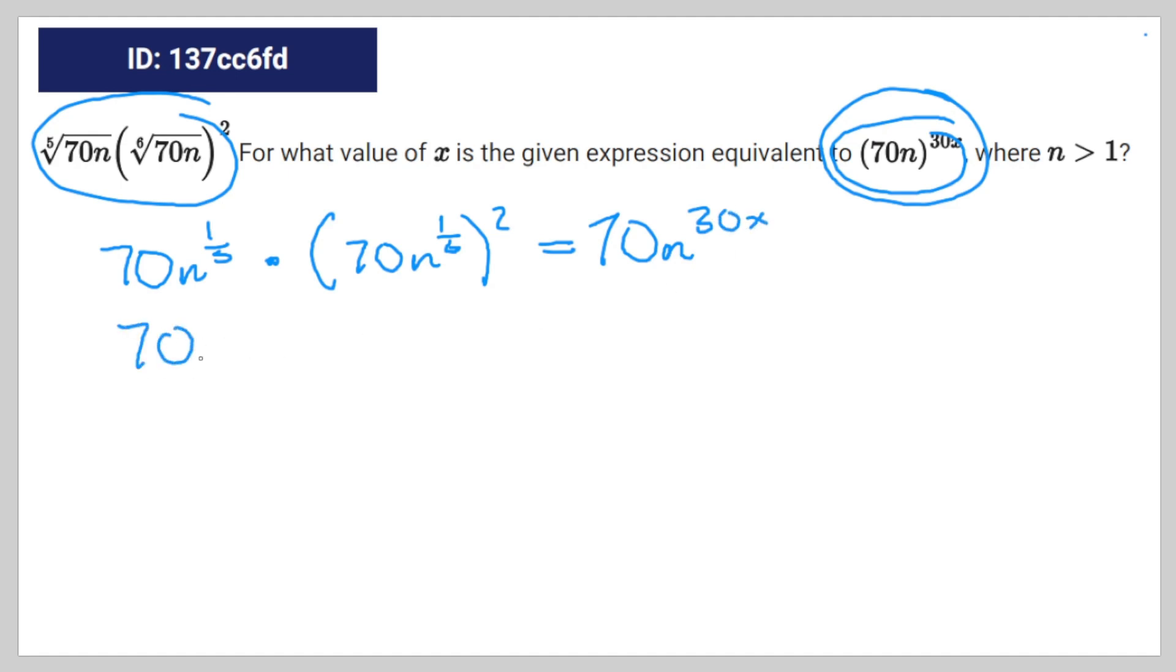You can rewrite that as 70n to the power of 1 fifths times 70n to the power of 2 sixths is equal to 70n to the power of 30x.